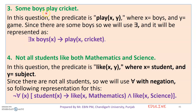Third example: 'Some boys play cricket.' Since it uses 'some,' we use the existential quantifier. The predicate is 'play(x, y)' where x is the boy and y is the game. The representation is: 'there are some x where x is a boy who plays cricket.'